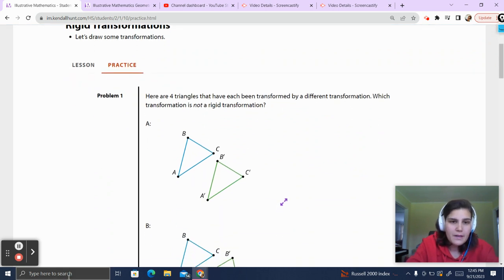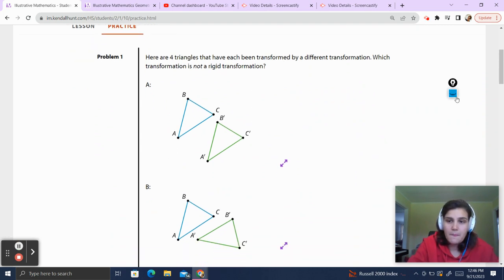Problem 1. Here are four triangles that have been transformed by different transformations. Which transformation is not a rigid transformation? Well, in order to do this question, first we have to ask ourselves, what is a rigid transformation?